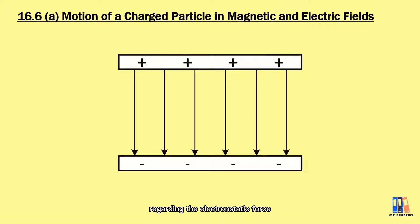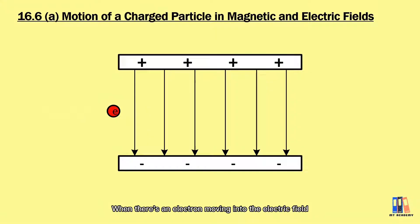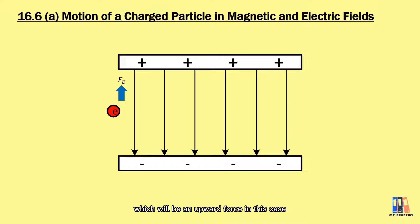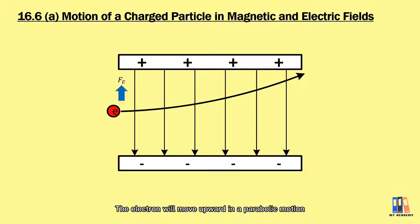First, let us review what we have learned in chapter 12 regarding the electrostatic force. When there's an electron moving into the electric field, we know that there will be an electrostatic force acting on the electron, which will be an upward force in this case. So the electron will move upward in a parabolic motion.